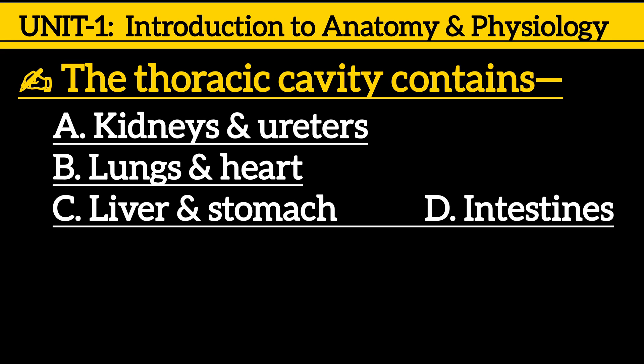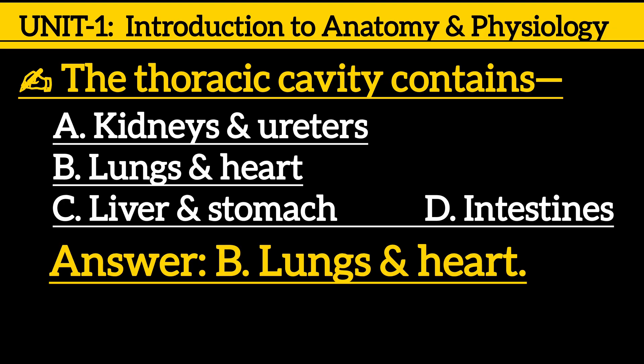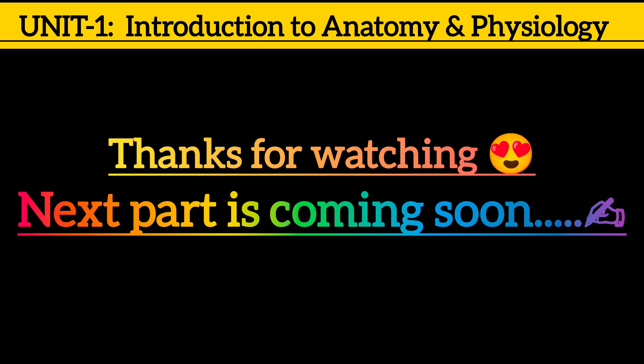Next one: The thoracic cavity contains — option A: kidneys and ureters, option B: lungs and heart, option C: liver and stomach, option D: intestines. The correct answer is option B: lungs and heart.